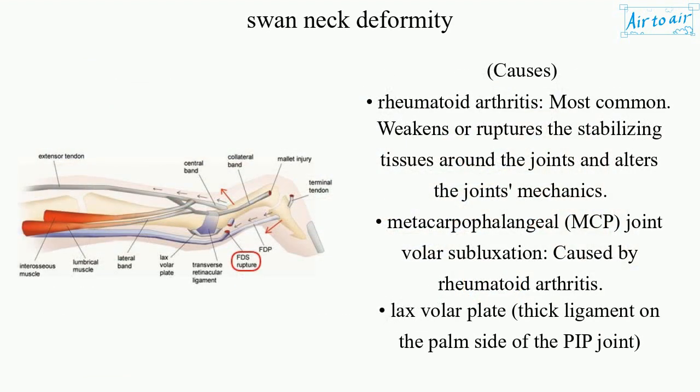Causes: Rheumatoid arthritis (most common) — weakens or ruptures the stabilizing tissues around the joints and alters the joint's mechanics. Metacarpophalangeal (MCP) joint volar subluxation, caused by rheumatoid arthritis. Lax volar plate — thick ligament on the palm side of the PIP joint.